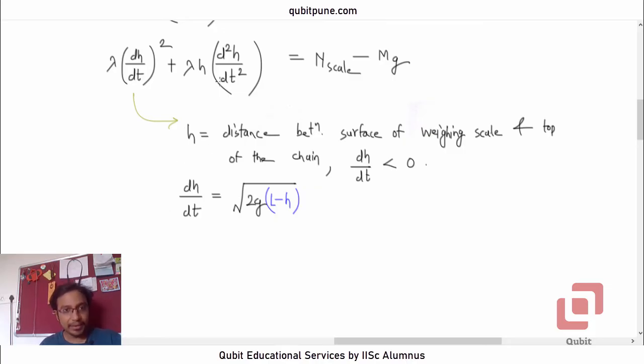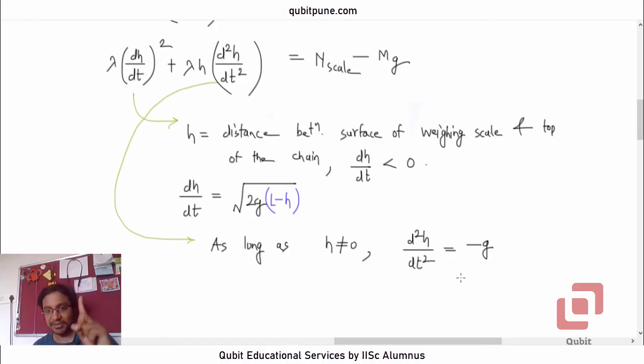Secondly, let us focus on this term, d²h/dt². For the top end of the chain, as long as it is falling and has not touched the surface, what is the acceleration? It is acceleration due to gravity. As long as h is not equal to 0, d²h/dt² equals negative g because it is downwards and our direction is upwards. Is this justified? Yes, because this is free fall. Under free fall, neglecting air resistance, it is acceleration due to gravity.